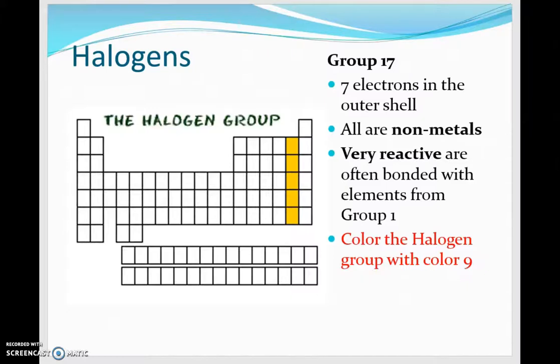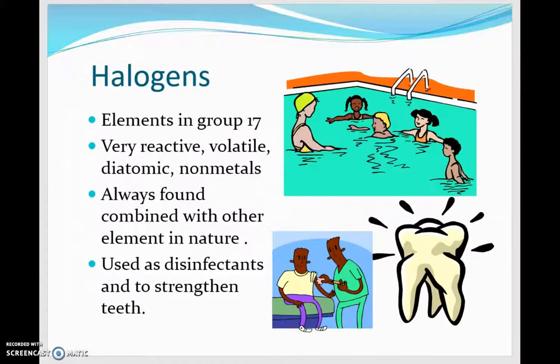The unstable isotopes means that is why we have not been able to form those in the lab. These are very reactive and are often bonded with elements in group one. As we pointed out before, we have sodium chloride and potassium chloride, which we use as salt and salt substitutes. They are in group 17. Another interesting fact about these: they're always found combined in nature, but they are used as disinfectants and also to strengthen teeth. You have fluoride in your toothpaste.